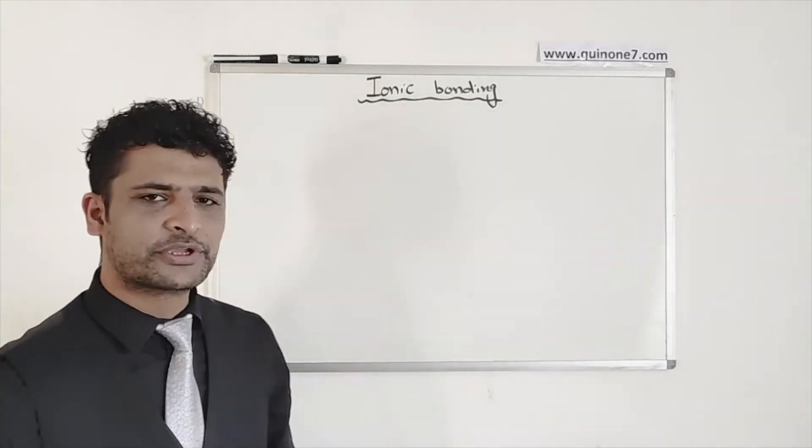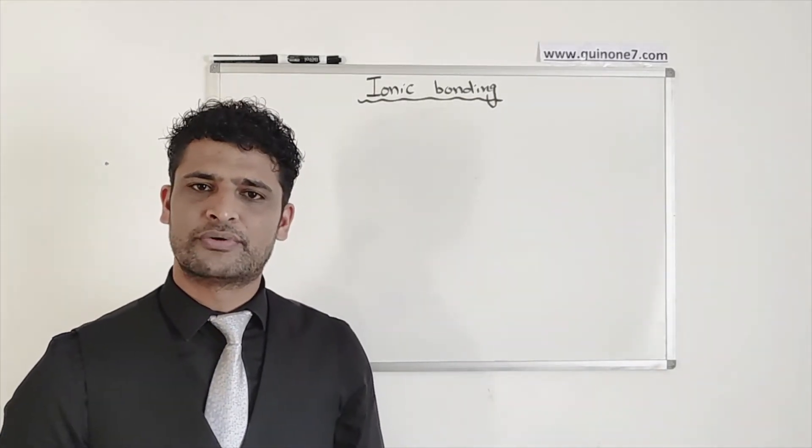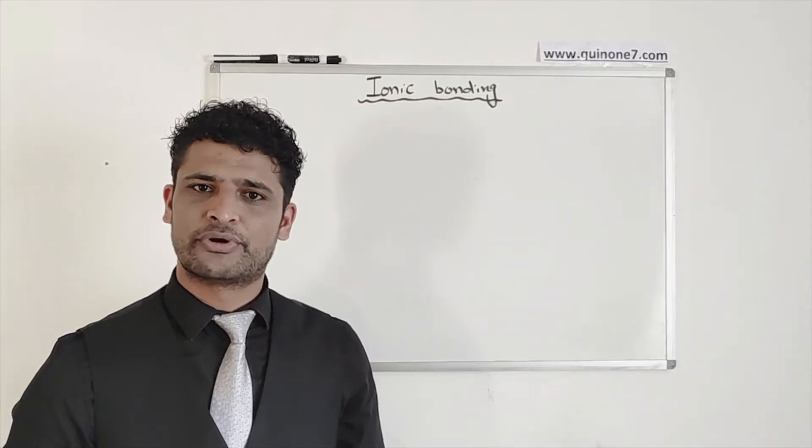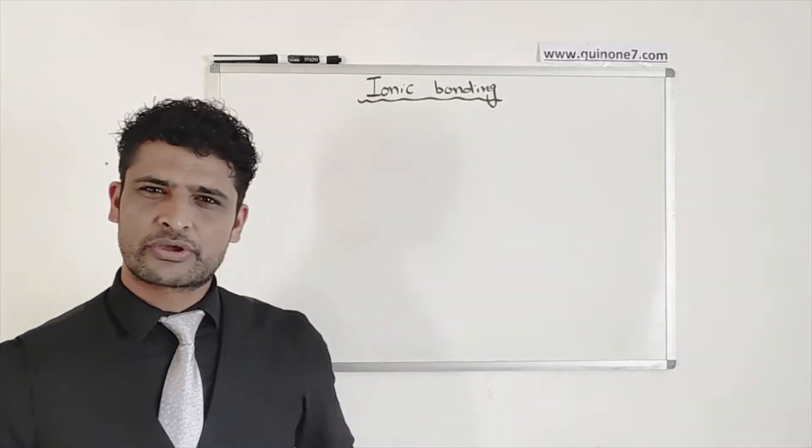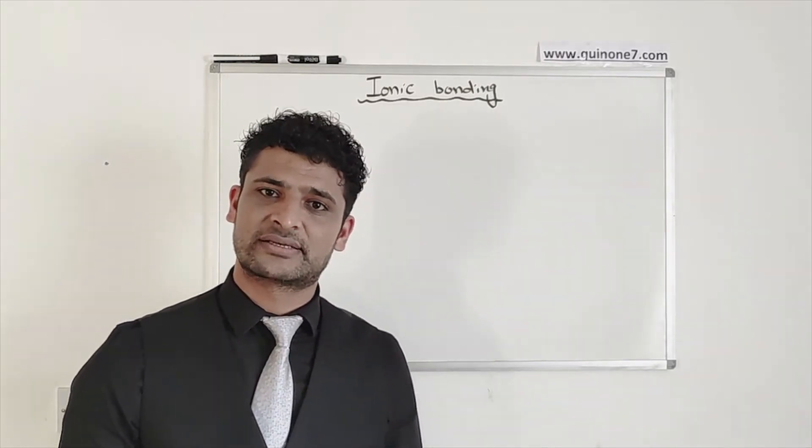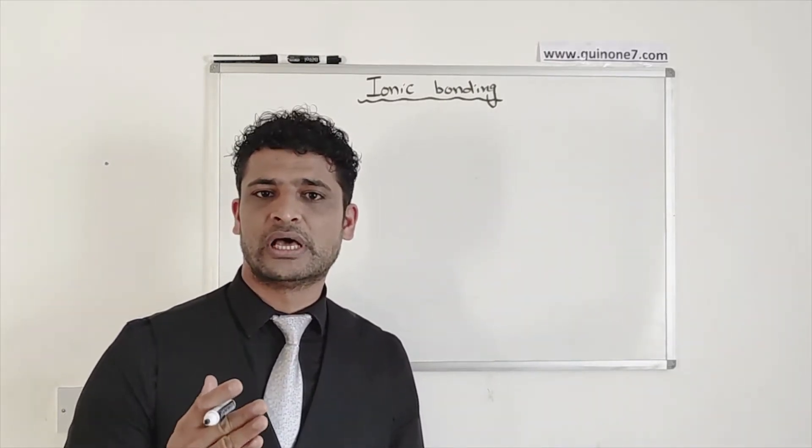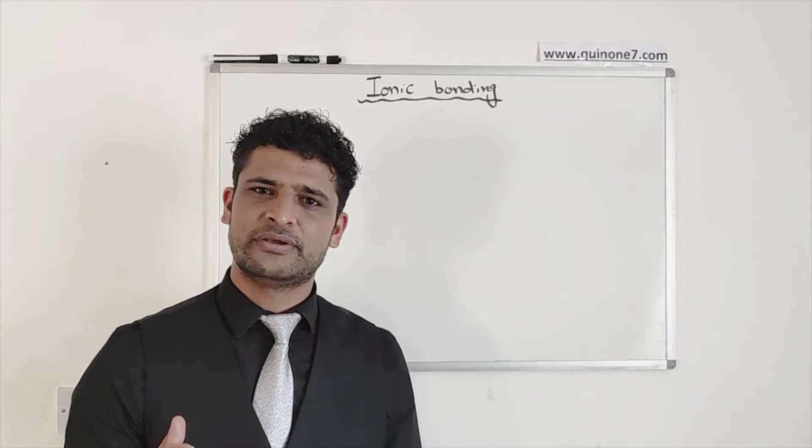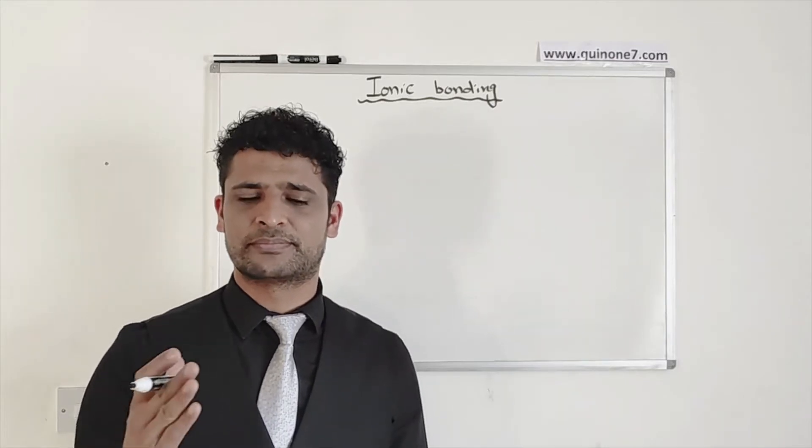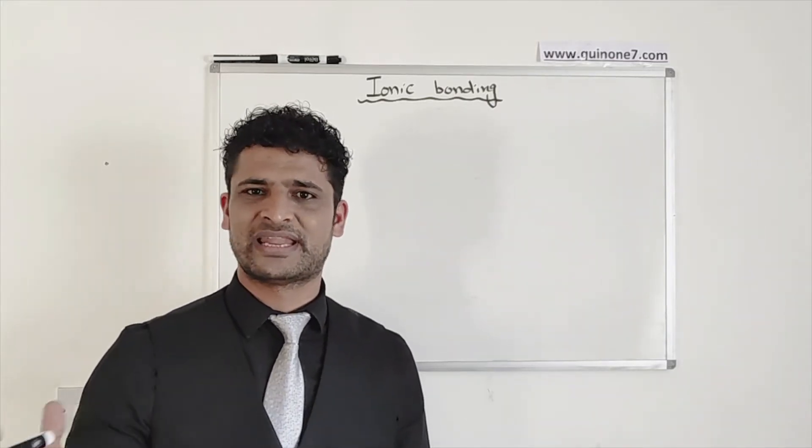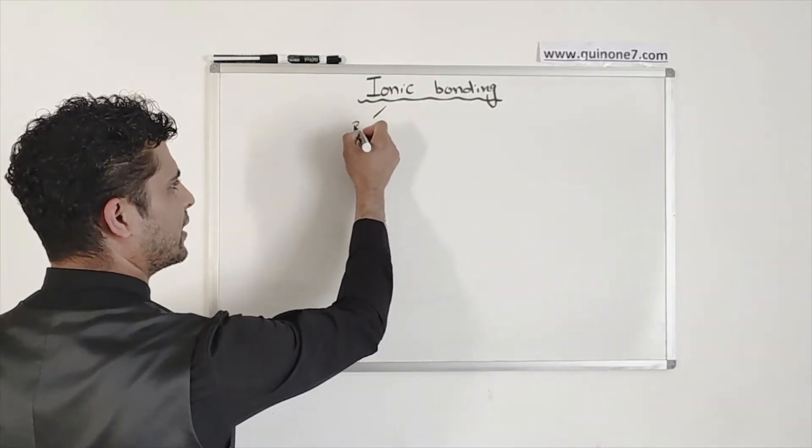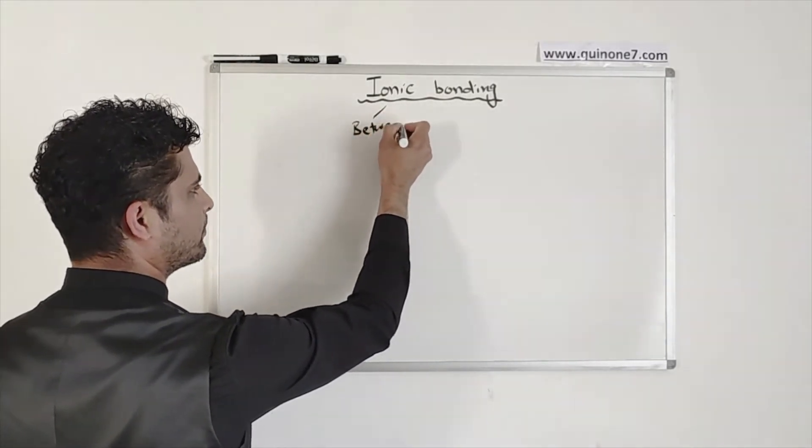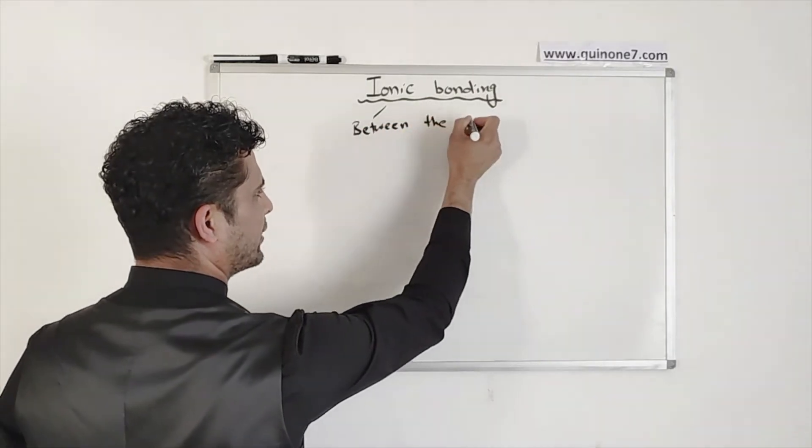Today we're going to look at ionic bonding. It's one of the three types of bonding like covalent bonding, metallic bonding and ionic bonding. In ionic bonding, we can look at the name. The name actually tells you that it is a bond between the ions. In chemistry, when we talk about ions, it's a bond between the positive and negative ions. So ionic bonding is actually between the ions.